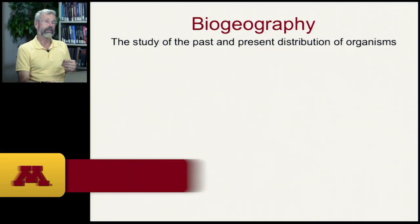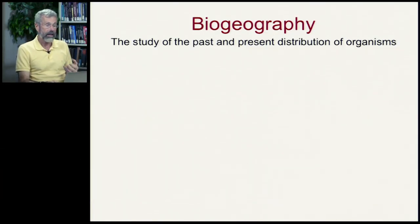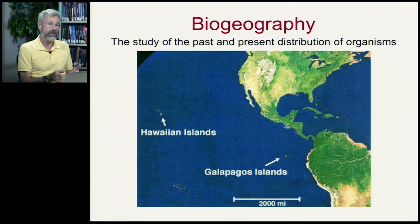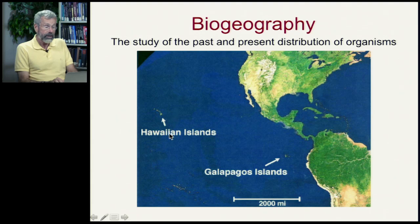The third form of evidence for evolution is called biogeography. Biogeography involves the study of the past and present distribution of organisms across the Earth's surface. If we look at a map, we would expect to see similar species living in neighboring areas. A good way to think about this is to use examples of archipelagos of islands like Hawaii or the Galapagos.